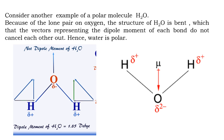Consider the H₂O molecule, where two hydrogen atoms are connected to an oxygen atom. Oxygen is more electronegative than hydrogen, so the shared pair of electrons is attracted towards the oxygen atom. Both O-H bonds are polar with vectors pointing toward oxygen. If H₂O were a linear molecule, the net dipole moment would have been zero.